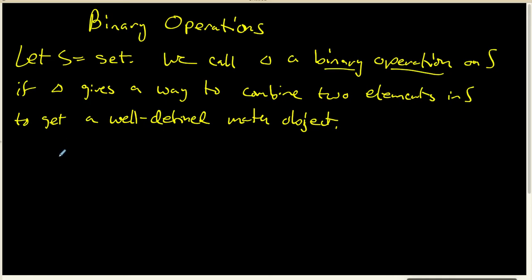The notation we use for a binary operation is typically called infix notation, where the operator goes between the two elements we are trying to combine. We can read this as A triangle B. It is important to note that this is infix notation—the operator goes between the two elements.